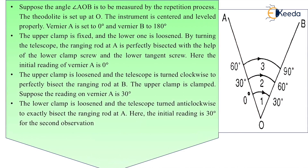Suppose you have to calculate angle AOB. First and most importantly, set up your instrument at station O. After setting up your instrument, do all the temporary adjustments — setting up, centering, leveling, and focusing. After this, set vernier A at 0 and vernier B at 180.